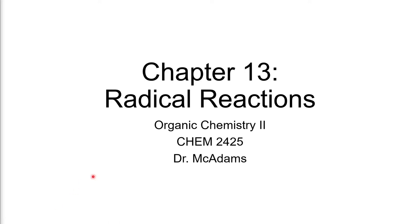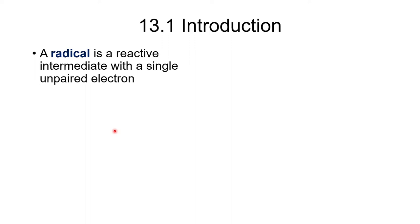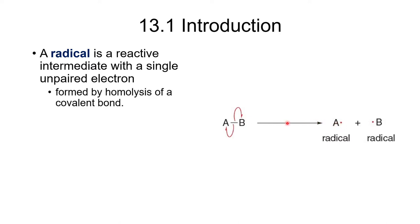Chapter 13 is all about radical reactions. We've seen radicals before, but we want to get into them in more depth. We'll start with a brief introduction: a radical is a reactive intermediate that has a single unpaired electron, represented by a dot. We form radicals by homolysis of a covalent bond.